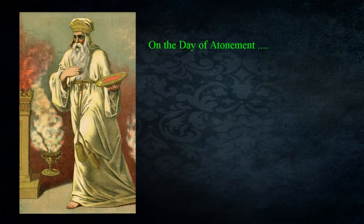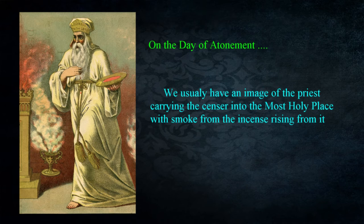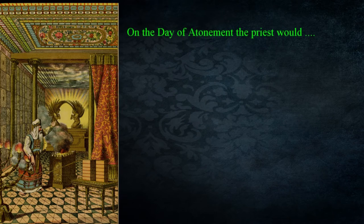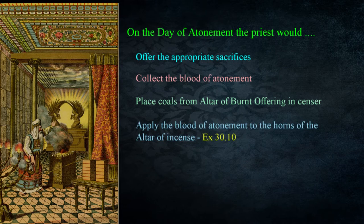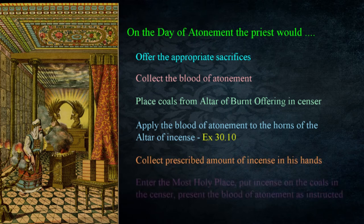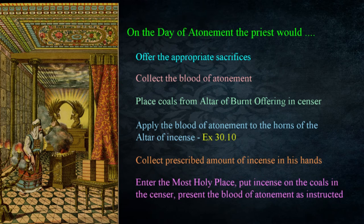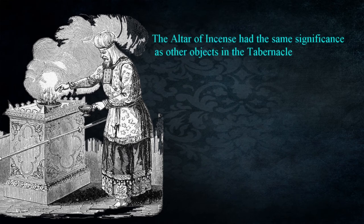As we read of the procedures the priest would follow on the day of atonement, we usually have an image of the priest carrying the censer into the most holy place with smoke from the incense rising from it. Reading carefully, it appears that the priest would offer the appropriate sacrifices, collect the blood of atonement, place coals from the altar of burnt offering in the censer, then enter the holy place with the blood and censer full of coals. Inside the tabernacle the priest would apply the blood of atonement to the horns of the altar of incense, collect the prescribed amount of incense in his hands, and proceed to the most holy place. Once there, he would put the incense on the coals burning in the censer so the smoke would cover the mercy seat, then present the blood of atonement as instructed. Once this was done, God would manifest his presence and set the sins of the people aside for the year.